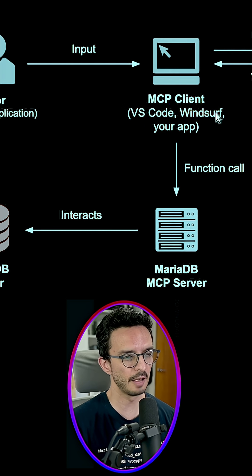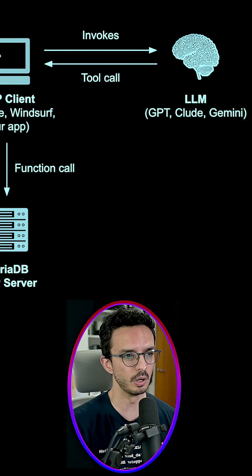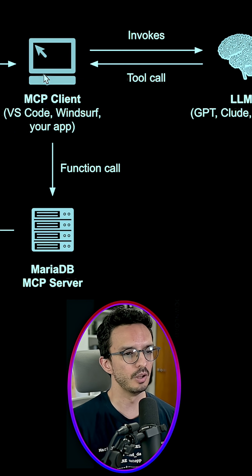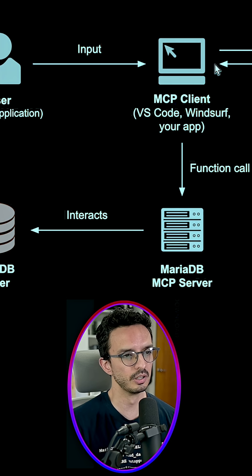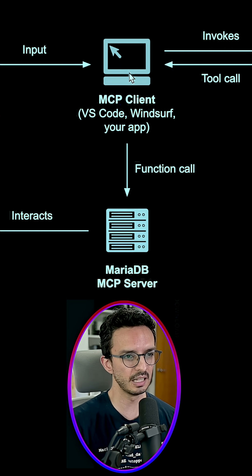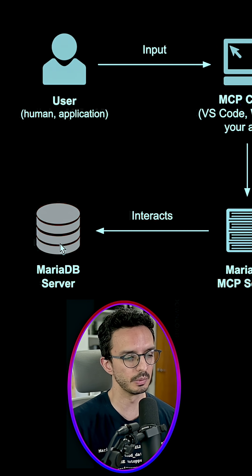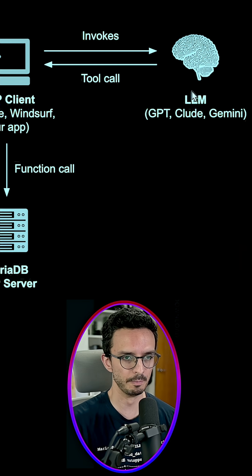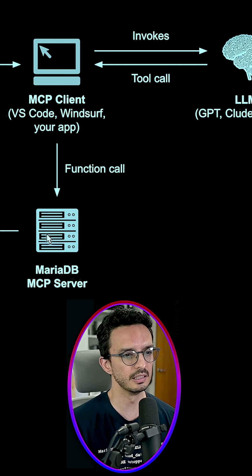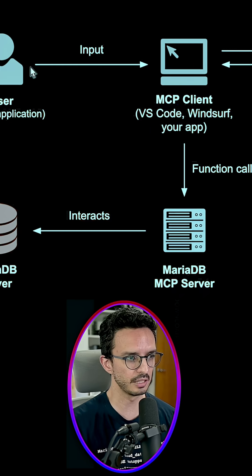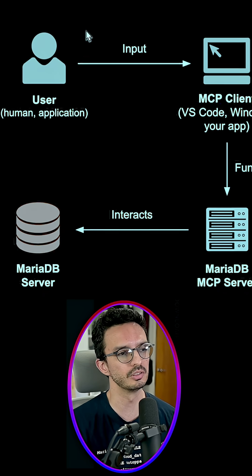Now when you have this set up, you can let the LLM know that it has access to the MariaDB MCP server. So in case there is a request from the user through, for example, Visual Studio Code that requires some kind of data that lives in the database, the MCP server can make that call, get the data from the MariaDB server, and return it to the LLM so it can create the final answer for the customer. The LLM gets whatever was returned and generates the answer back to the MCP client, which in turn returns it to the user.